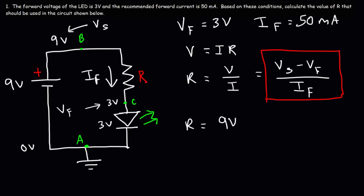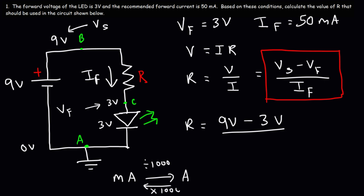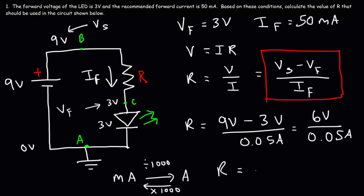In this example, it's 9 volts minus 3 volts divided by 50 milliamps. We need to convert milliamps into amps — divide by 1,000. So 50 milliamps divided by 1,000 is 0.05 amps. We have 9 volts minus 3 volts, which is 6 volts. Then 6 divided by 0.05 gives us a resistor value of 120 ohms. That is the answer.